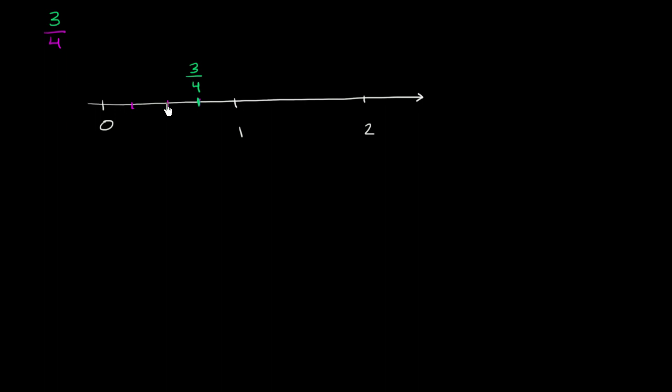This point right over here, what do you think this is going to be? Well, we've moved 1, 2 of the spaces towards 4. So this is 2 over 4. And this mark right over here on the number line, what is that going to be? Well, we've moved 1 of the four spaces towards 1. So this is 1 fourth.